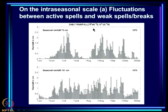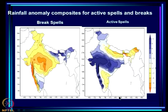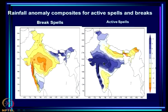On the intra-seasonal scale, two special features are: one is fluctuations between active spells and weak spells, which you see year after year, and active spells and a break such as the one you see here. Fluctuation between active and weak spell is another important feature of the sub-seasonal or intra-seasonal variation of the monsoon. This is the rainfall anomaly composite corresponding to a break spell — you see a huge deficit all over here and above normal over the southern tip of the peninsula and northeast Himalayan foothills. This is the active spell's rainfall anomaly, which is almost a mirror image of the breaks.